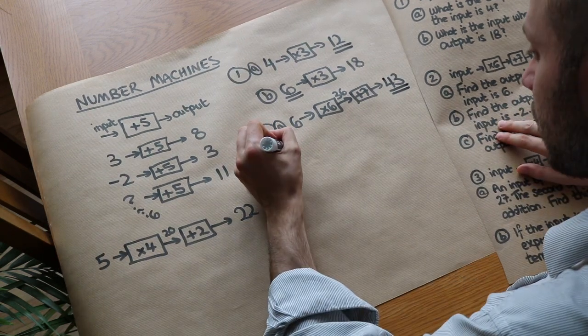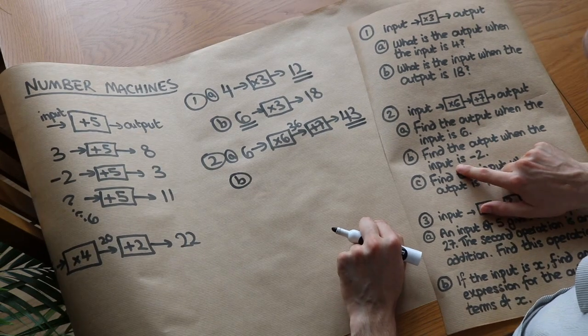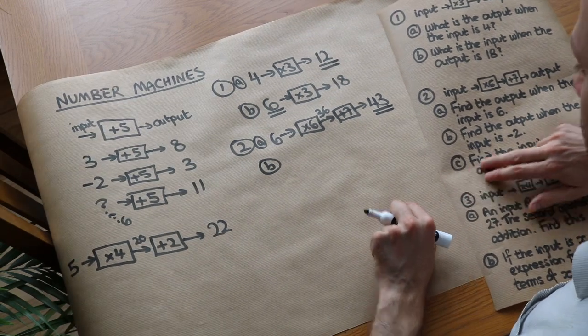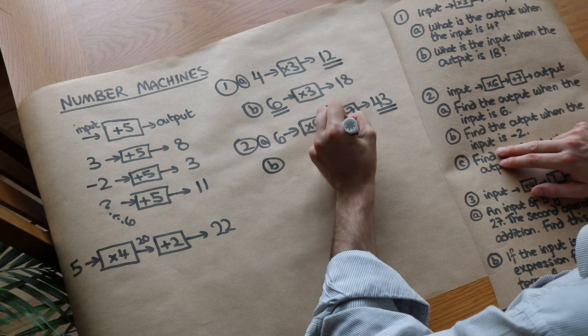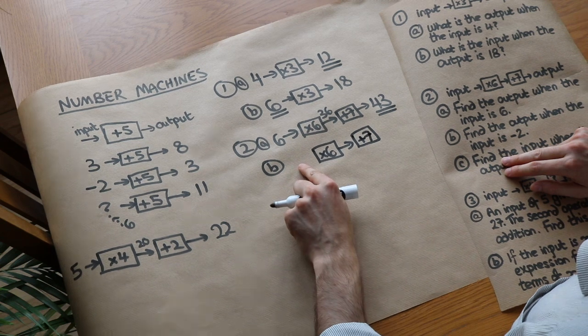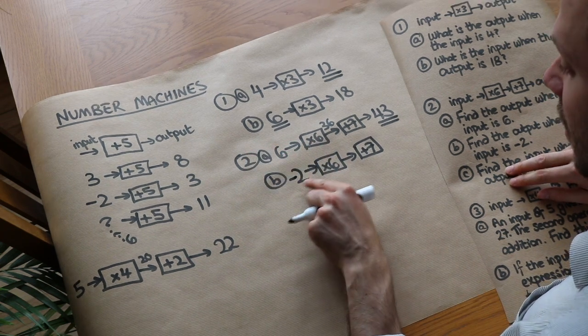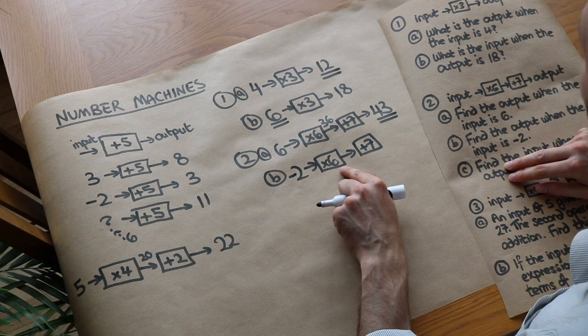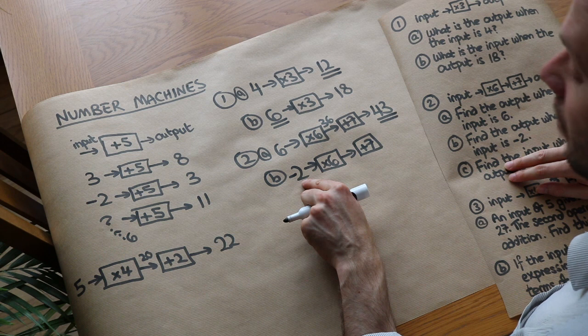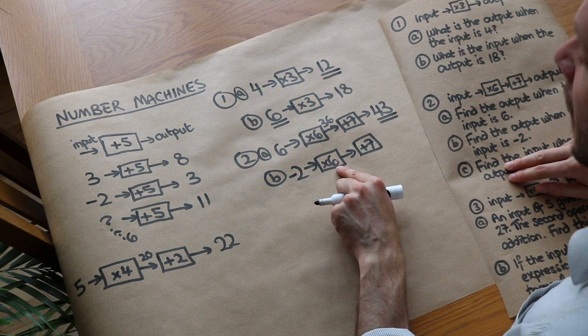What about the second question? Find the output when the input is minus 2. So again we're told the input, the input is minus 2. That first gets fed into the times by 6, so minus 2 times 6. Now we know that 2 times 6 is 12, but if you have a negative number times by a positive number, then that gives you a negative number.